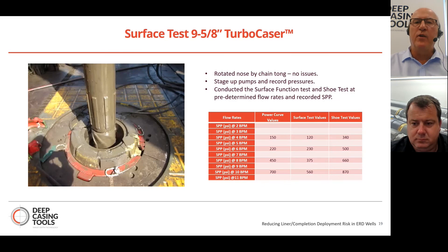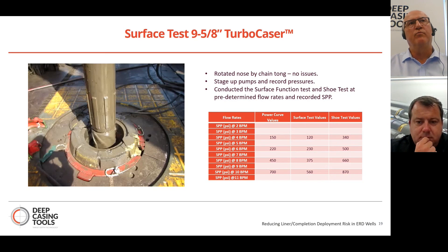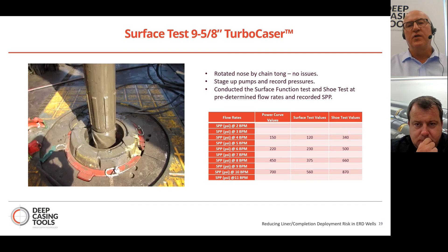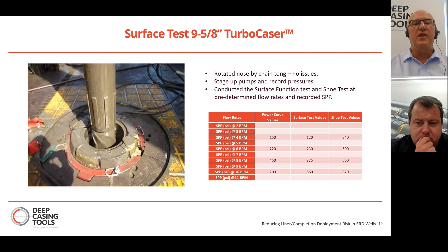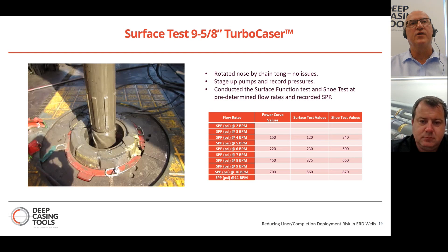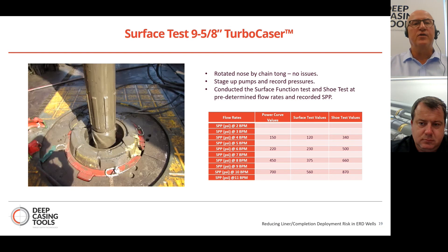Here's an example of how we operate these tools. We pick up the tool and test it on surface at different flow rates, ensuring the standby pressures match the power curve pressures we expected to see. We then run it down to the shoe and take pressures at different flow rates to ensure the tool is working correctly before going out into open hole. The hydraulics are predictable throughout, so we carry on into the hole confident in the tool's performance.